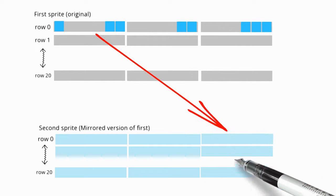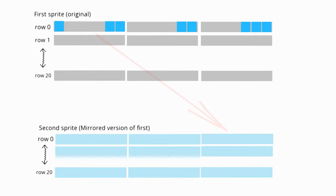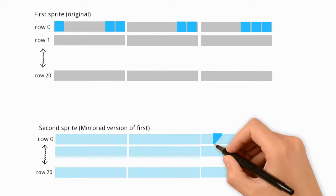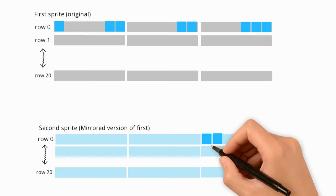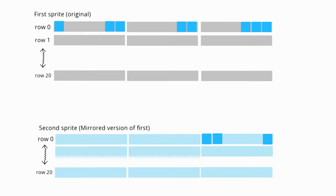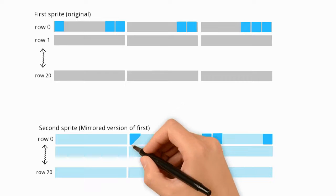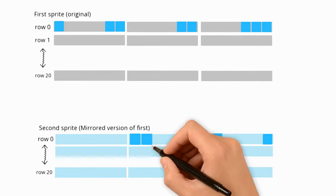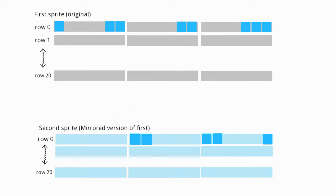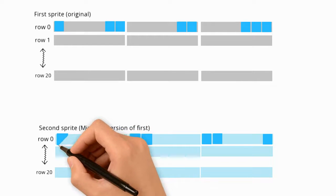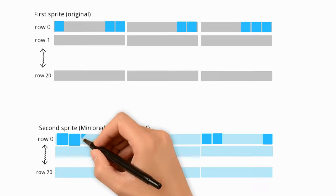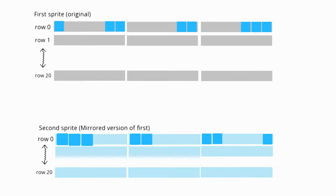First let's look at the first byte. We need to mirror that or copy that to the last byte in the second sprite. And the second thing we need to do is to mirror the bit positions as you can see here. Then the middle byte we can just copy, but also there we need to mirror the bits in position. And thirdly we need the last byte of the first row — we move that to copy it to the first position, and also there we need to mirror the bits in the byte. Once we have done that, we need to repeat this in a loop for each memory line of the sprite.